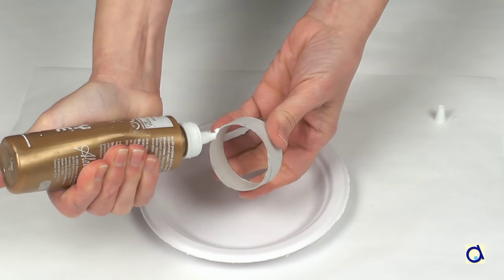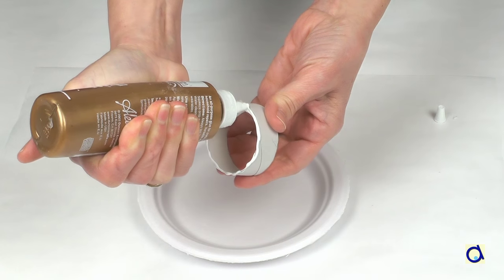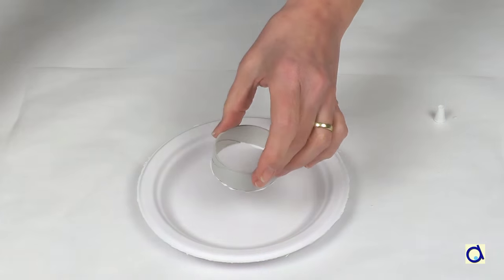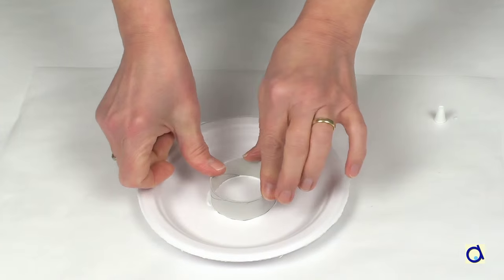Take two small plates and glue the piece of tube with white glue in the centre of one of the small paper plates. This piece of tube will be used to support the LED candle when the lantern is finished.